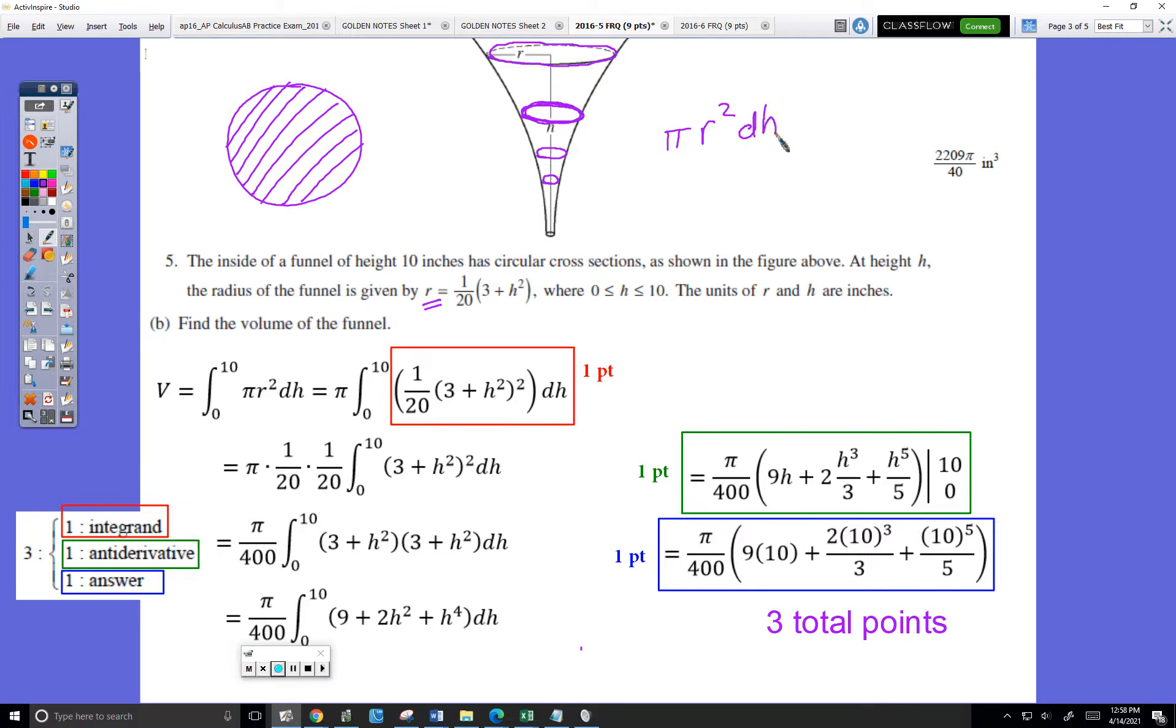So this is a formula for calculating the volume of one slice. I want to do that for many slices, so I have to do it for all the different values of h. So there's my formula for calculating the volume of the entire funnel. I believe if you have this, they will give you the first point.